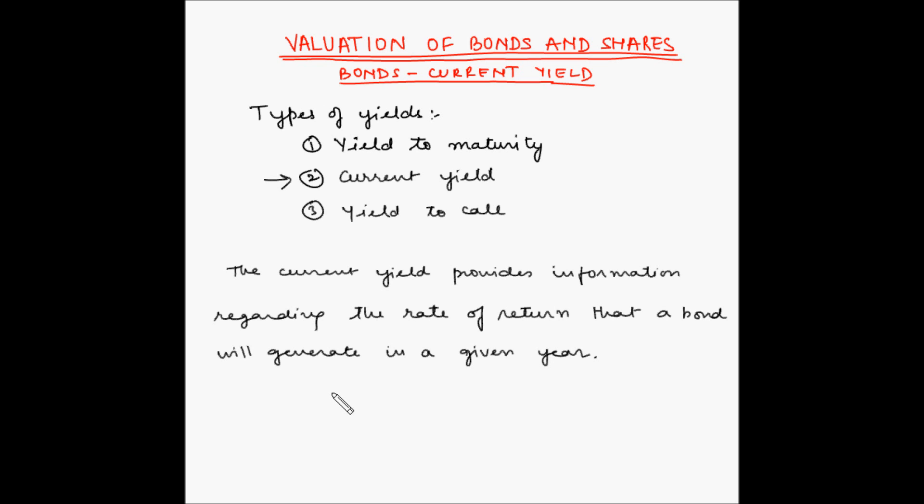Let's consider an example. This is the case of a bond where the interest received by the investor at the end of every year is 100 rupees. And at Maturity, the Maturity value is 1000 rupees.